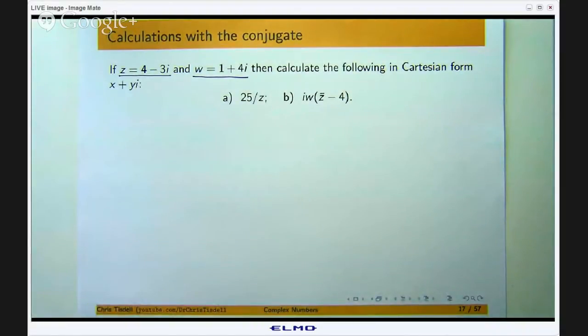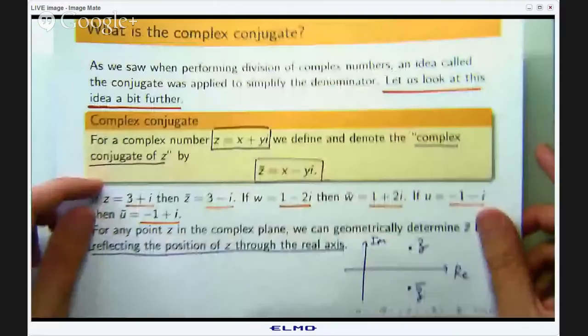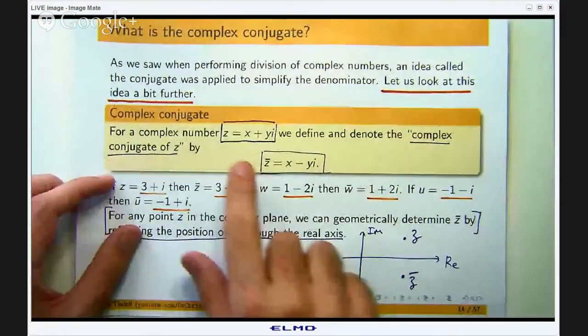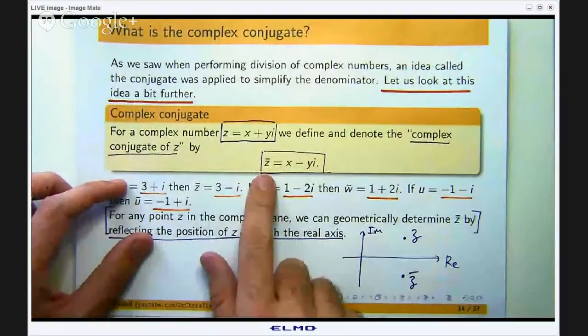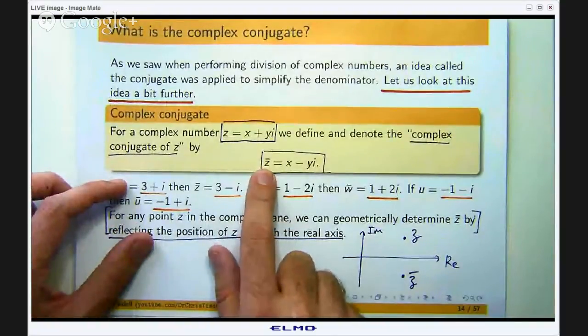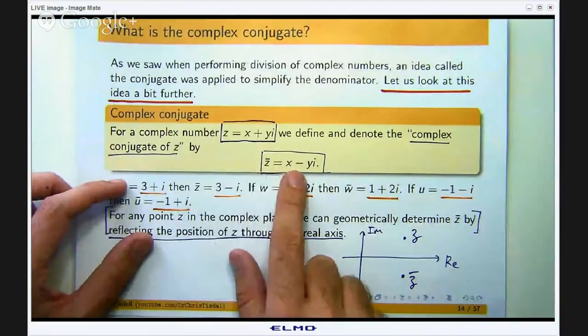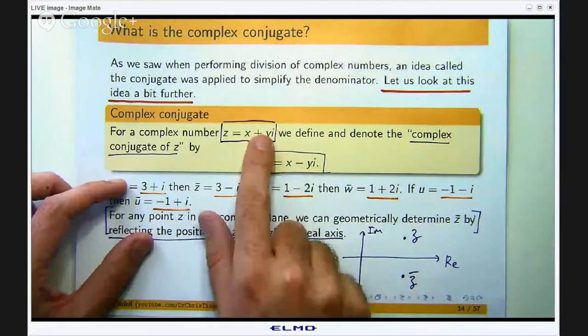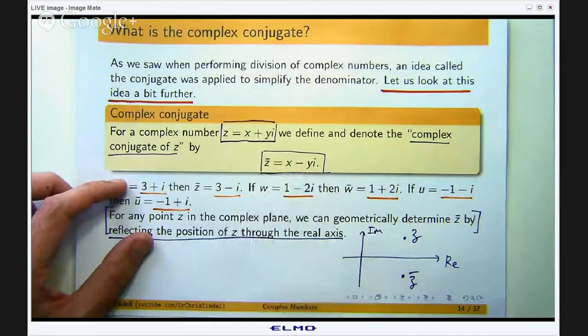Now just to refresh your memory, if I have a complex number Z which is say x plus yi then the conjugate of Z denoted by Z bar is just x minus yi. So you change the sign on the coefficient of y.